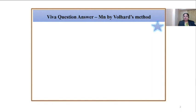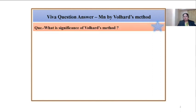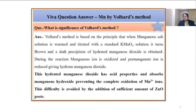The topic is estimation of manganese by Willard's method. Question: What is the significance of Willard's method? Willard's method is based on the principle that when a manganese salt solution is warmed and titrated with standard KMnO4 solution, it turns brown and a dark precipitate of hydrated manganese dioxide is obtained. During the reaction, manganous ion is oxidized and permanganate is reduced, giving hydrous manganese dioxide. This hydrated MnO2 has acidic properties and absorbs manganese hydroxide, preventing complete oxidation of Mn²⁺ ions. This difficulty is avoided by adding a sufficient amount of zinc oxide paste.